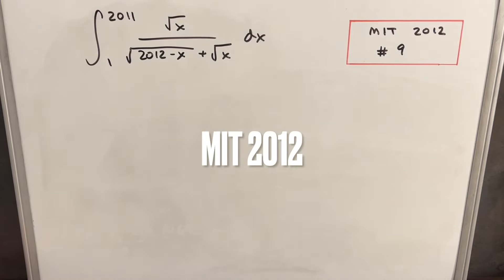Hey, I've got another integral on the board. This one's from MIT 2012, problem number nine. We have the integral from 1 to 2011 of square root of x over 2012 minus x plus square root of x dx.